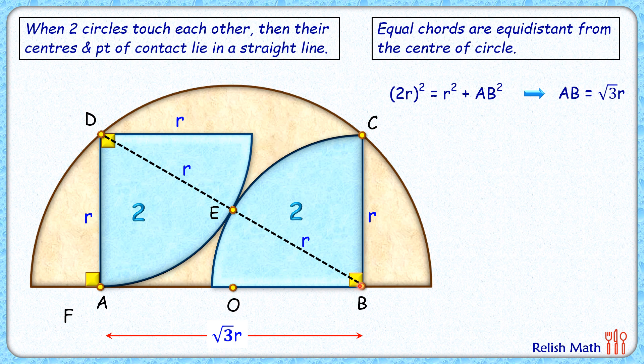So these half lengths of the chords will also be equidistant from point O, which means the lengths AO and OB are equal. The full length is √3r, so each length will be √3r/2.